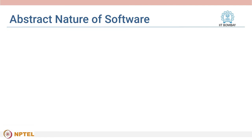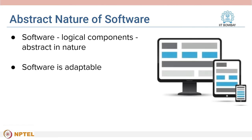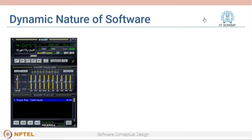However, software most of the time is made up of logical components which are very abstract in nature. Due to this abstract nature, it is possible to quickly adapt software based on the needs or requirements of users. Hence, software is also adaptable and can be changed by anyone on the team. That also brings us to the next difference — a building is static whereas software keeps changing.